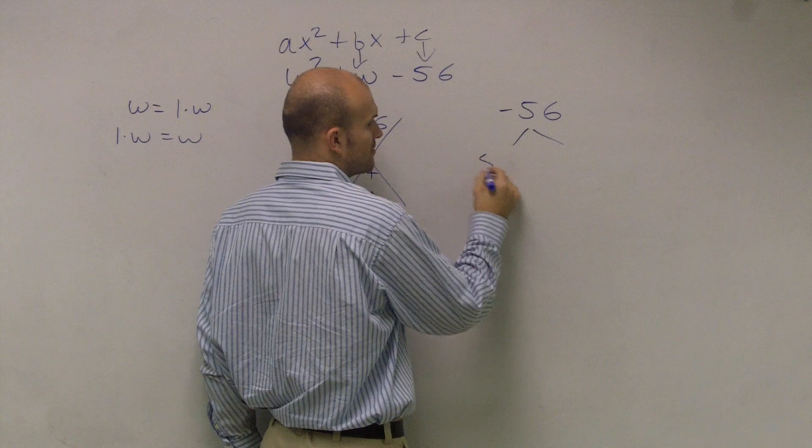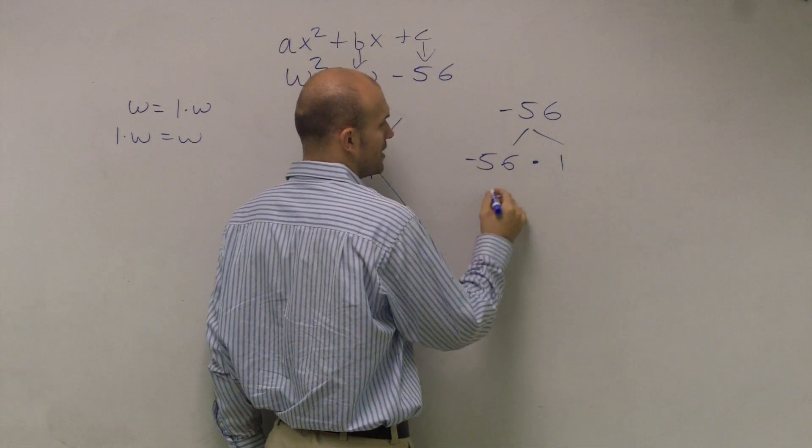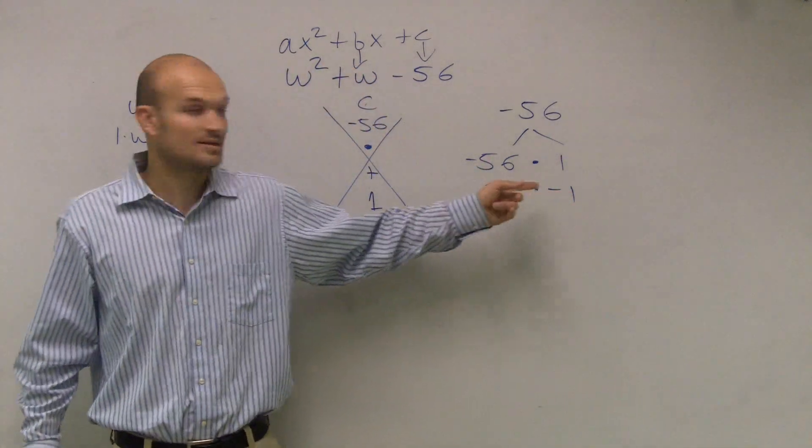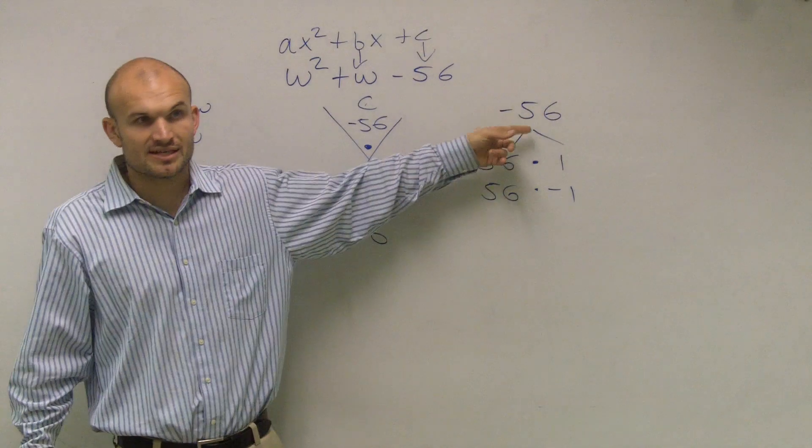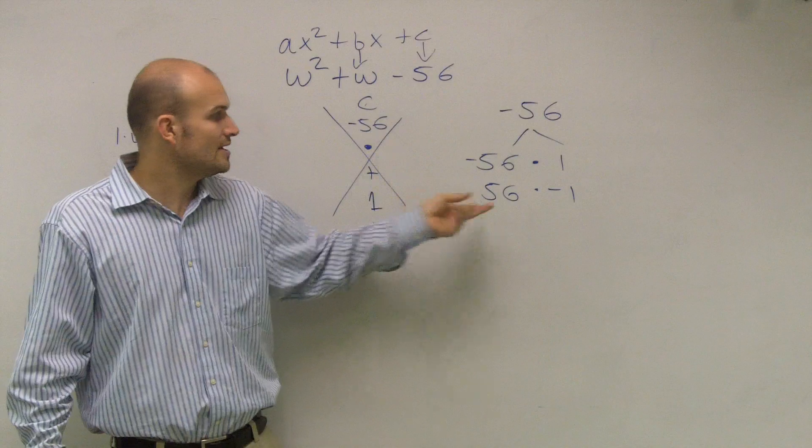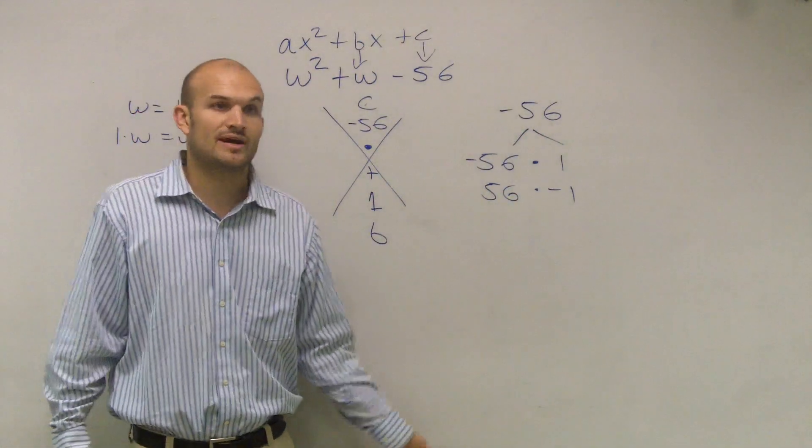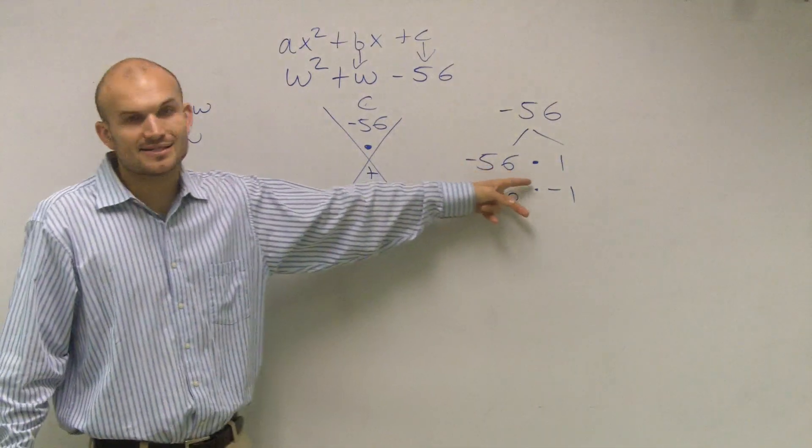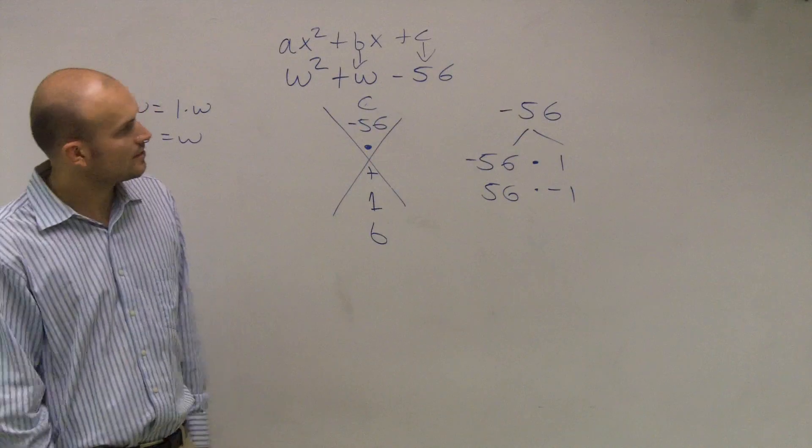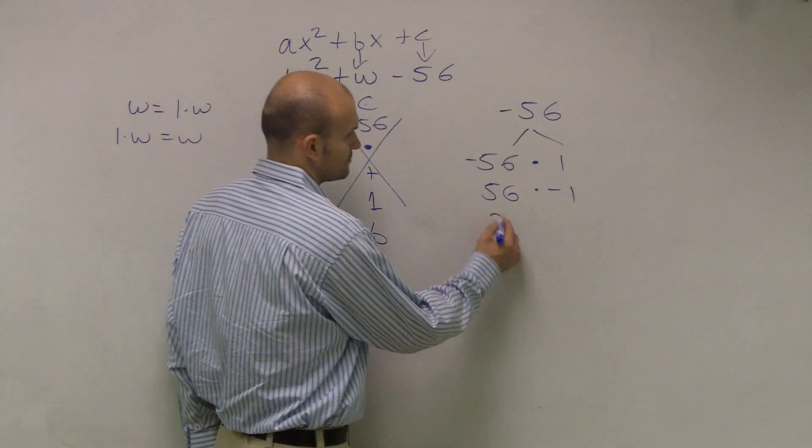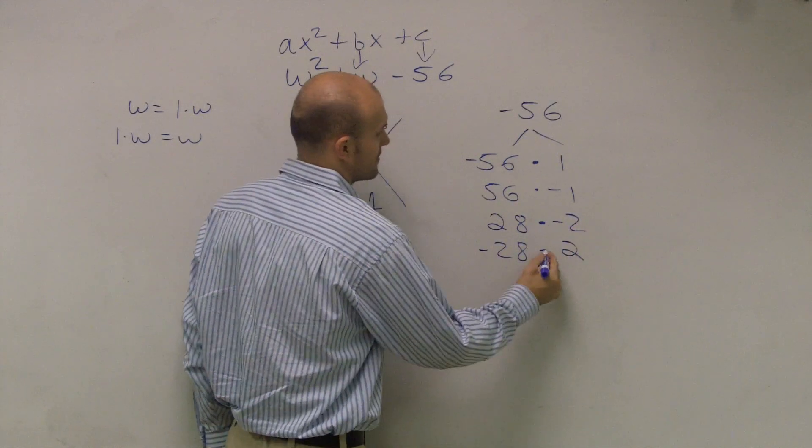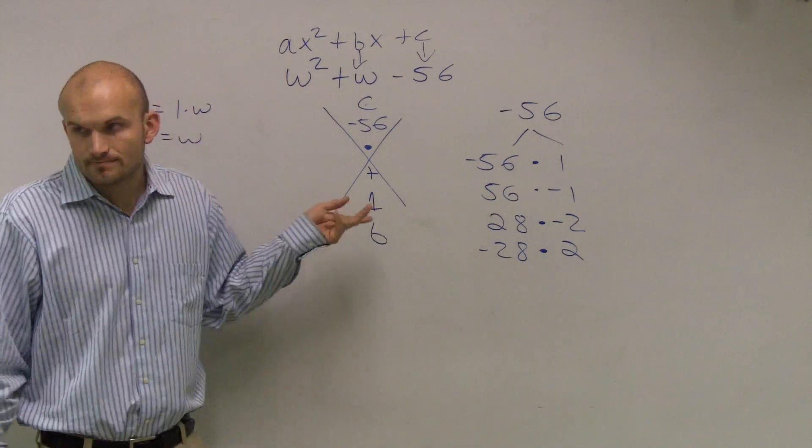I can either write, let's work on the first term, which is always the easiest, negative 56 times 1, or 56 times negative 1. Now make sure you write both of these because there's a big difference. Because they both multiply to give you negative 56, but when you add these, there's a difference. Negative 56 plus 1 is negative 55. 56 plus a negative 1 is a positive 55. So there's a big difference. However, I just said negative 55 or positive 55, right? We're looking for 1. So I go down the list and I say, okay, how about 28 times 2 times negative 2 and negative 28 times 2. Do any of those, when added up, equal 1? No.